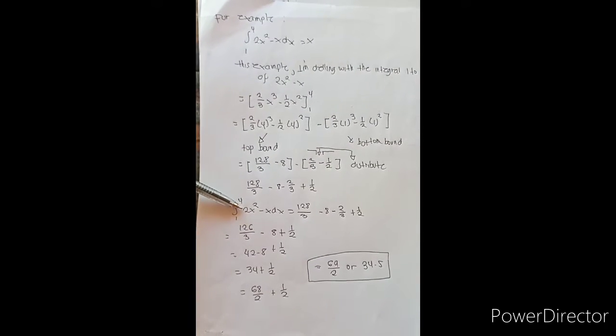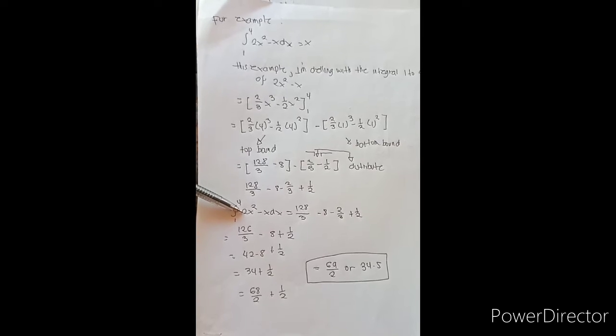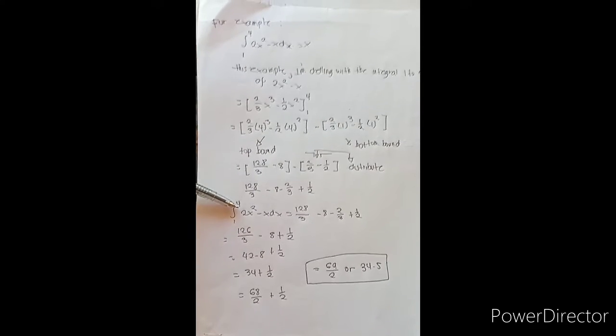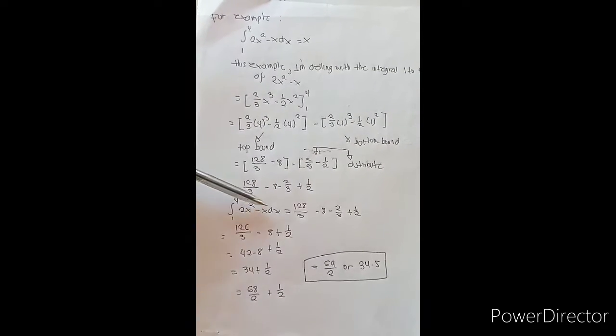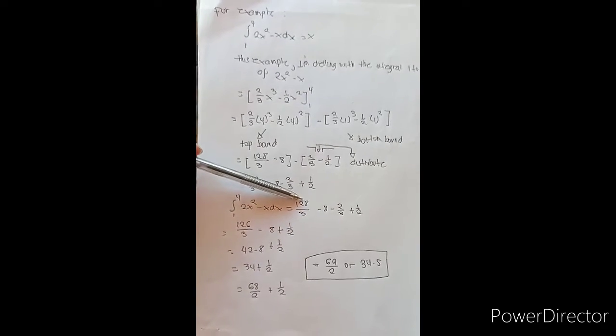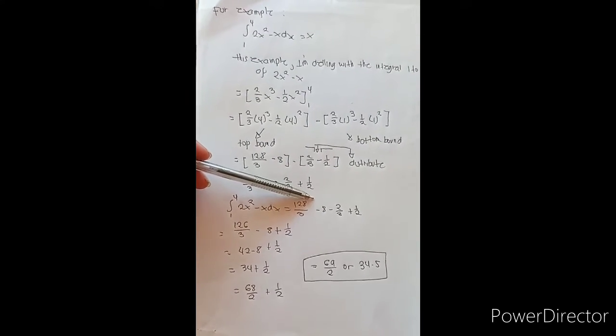The integral of 2x² - x dx evaluated from 1 to 4 is equal to 128/3 - 8 - 2/3 + 1/2.